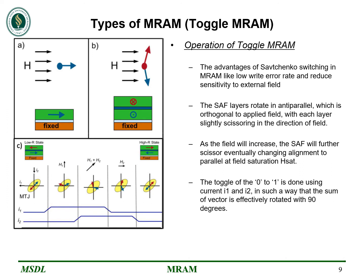Now let's talk about Toggle MRAM operation. The advantage of Savtchenko Switching is a low write error rate and reduced sensitivity to external field. For any synthetic antiferromagnet (SAF) layers that are anti-parallel, one ferromagnetic material is parallel to the magnetic field while two ferromagnetic materials have an anti-parallel behavior. As an external field is applied, this forms a scissor-shape alignment. Eventually this alignment changes into a parallel form at field saturation, denoted by H_set. The toggle from 0 to 1 is done using currents I1 and I2 such that the vector sum is effectively rotated 90 degrees.